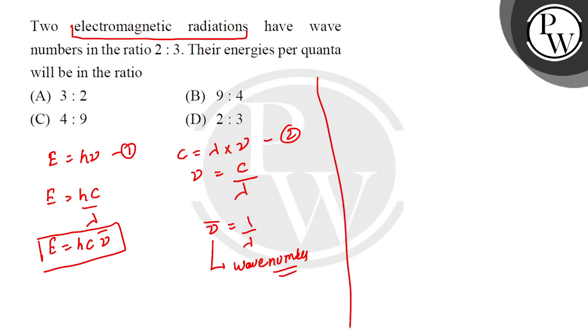So if we have two radiations, what do I call the radiation energy? E1 equals hc·ν̄1, and the other radiation energy E2 equals hc·ν̄2.